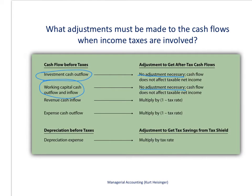The third item is revenue cash inflow. The revenue we receive requires us to pay income taxes on it, so the true cash we get from that revenue is something less than the actual revenue received from customers. To get the after-tax cash flows, we take the revenue and multiply it by one minus the tax rate. If our tax rate is 40%, we multiply revenue by 1 minus 0.4, which equals 0.6.